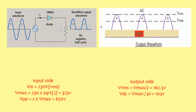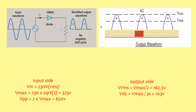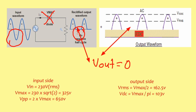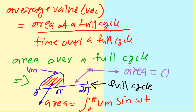When an input AC voltage is applied, during the positive half-cycle, the diode is forward biased and allows electric current. During the negative half-cycle of input voltage, the output voltage is equal to zero.